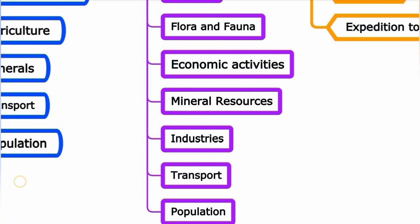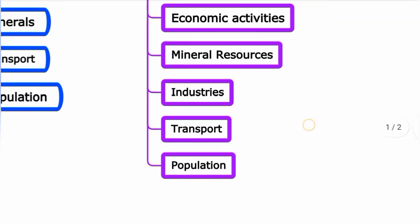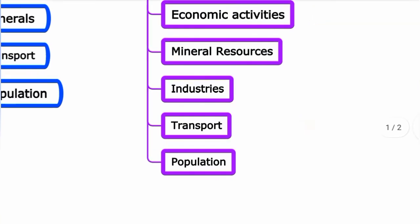Australia's mineral resources include bauxite, ilmenite, and zircon. Australia is the world's second largest producer of several minerals, making mineral resources a key primary industry.